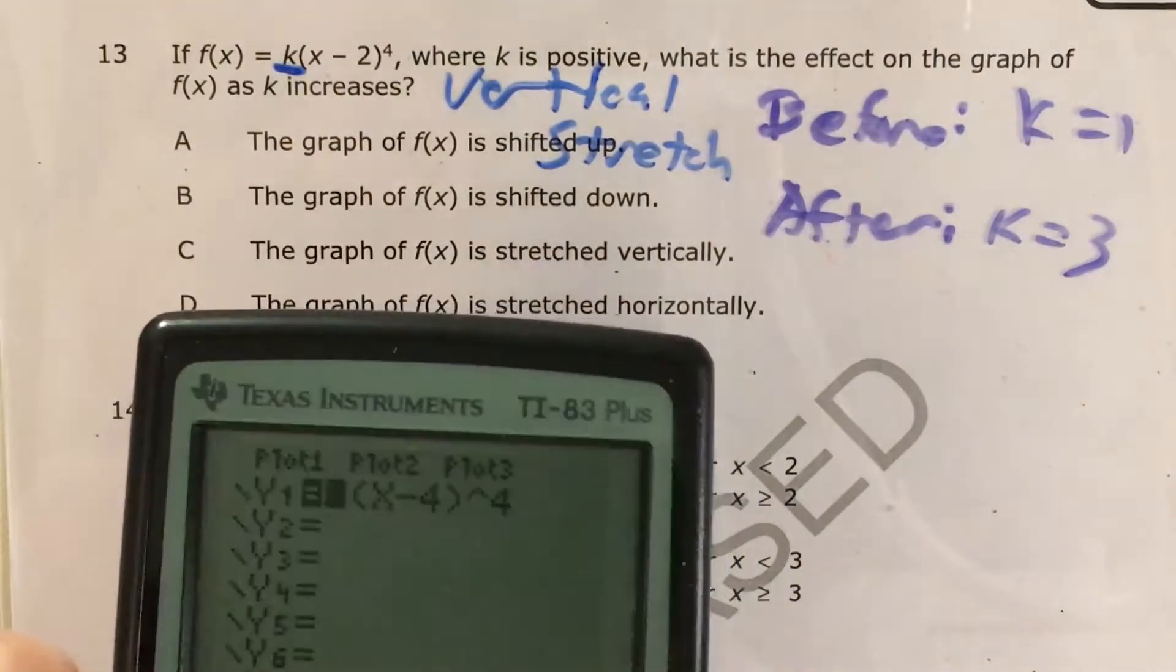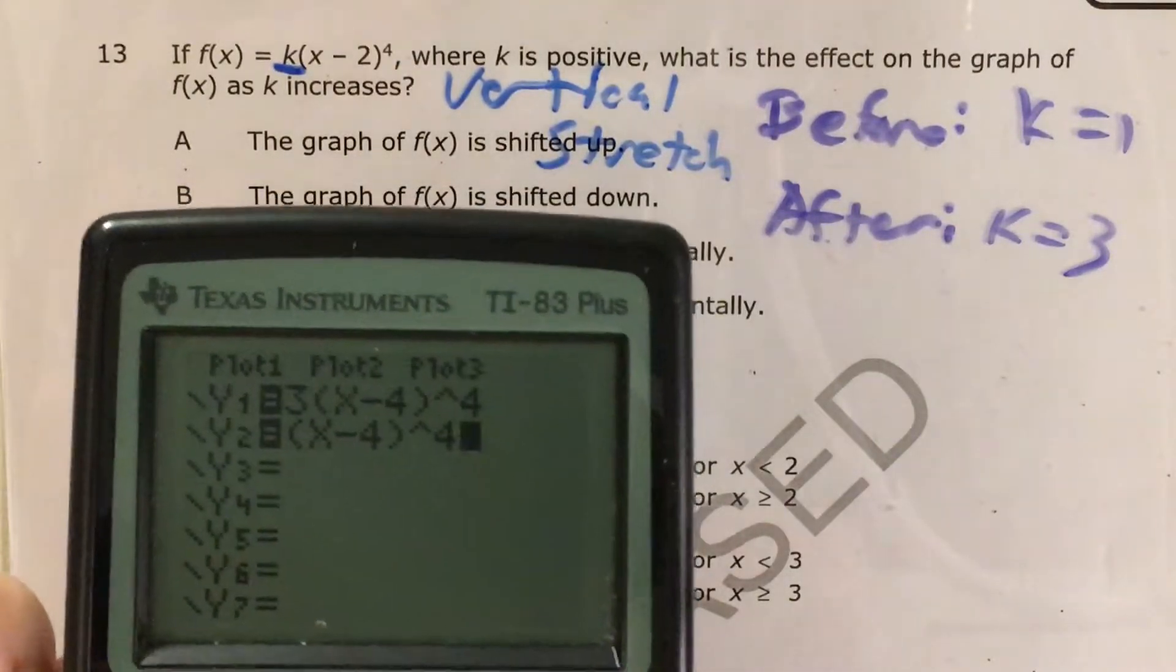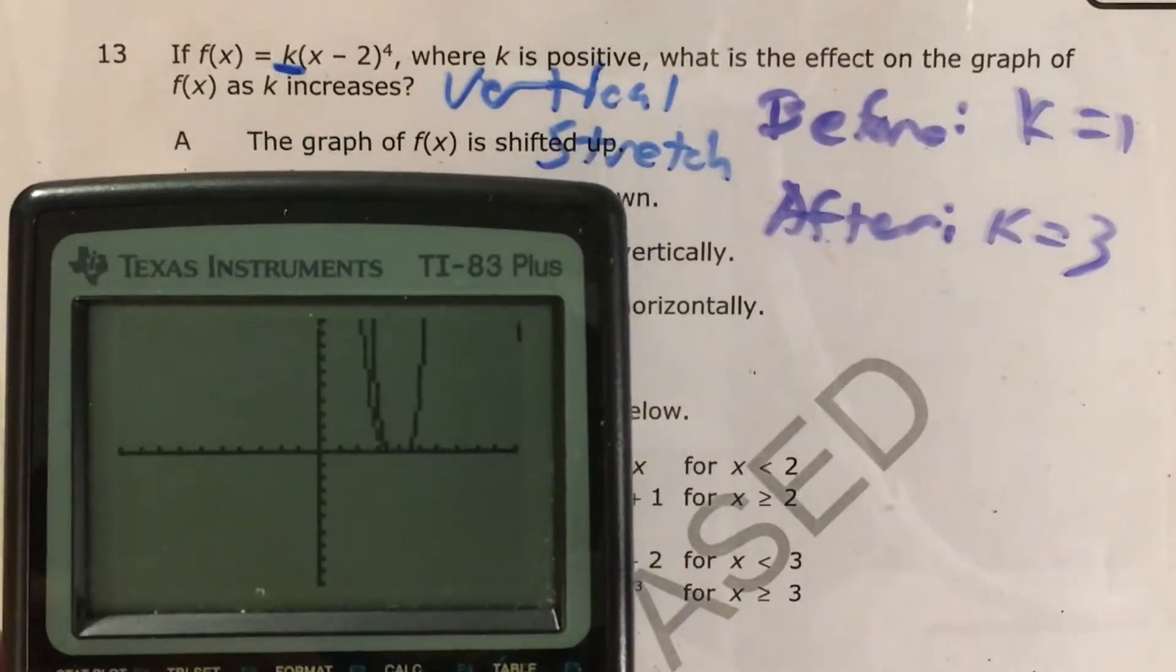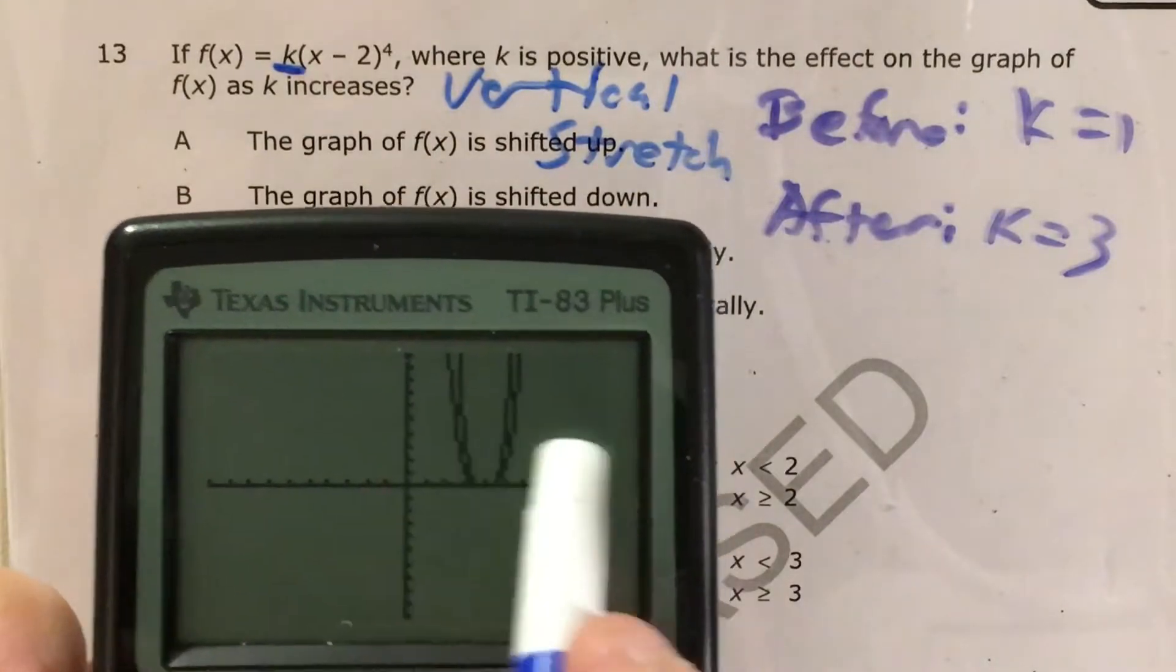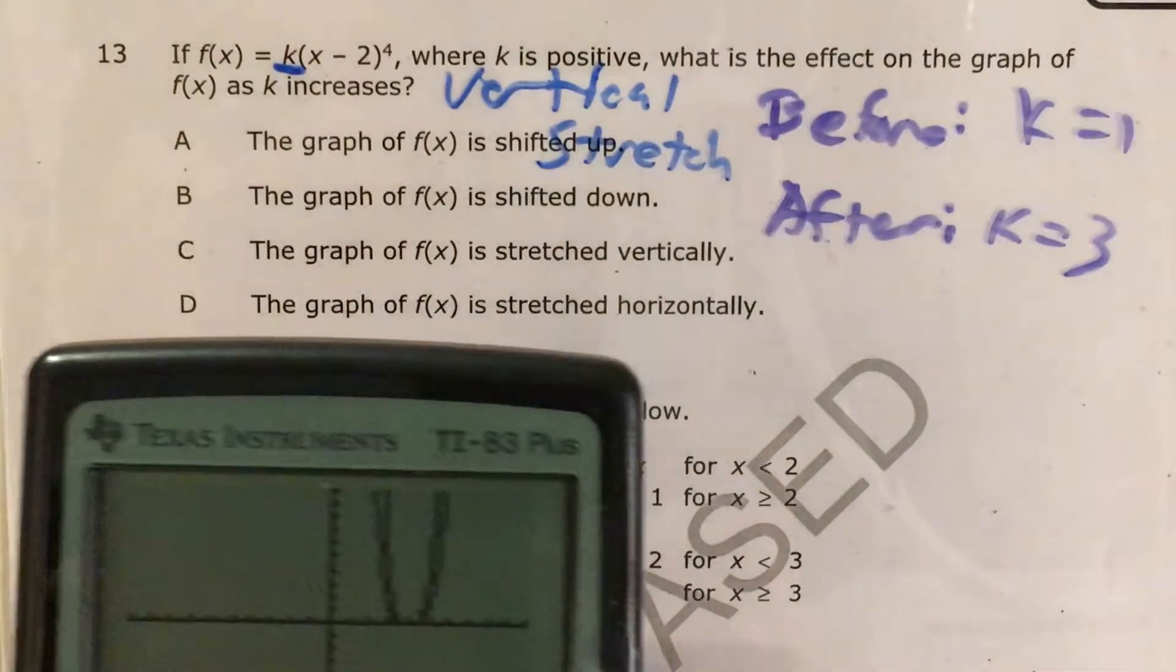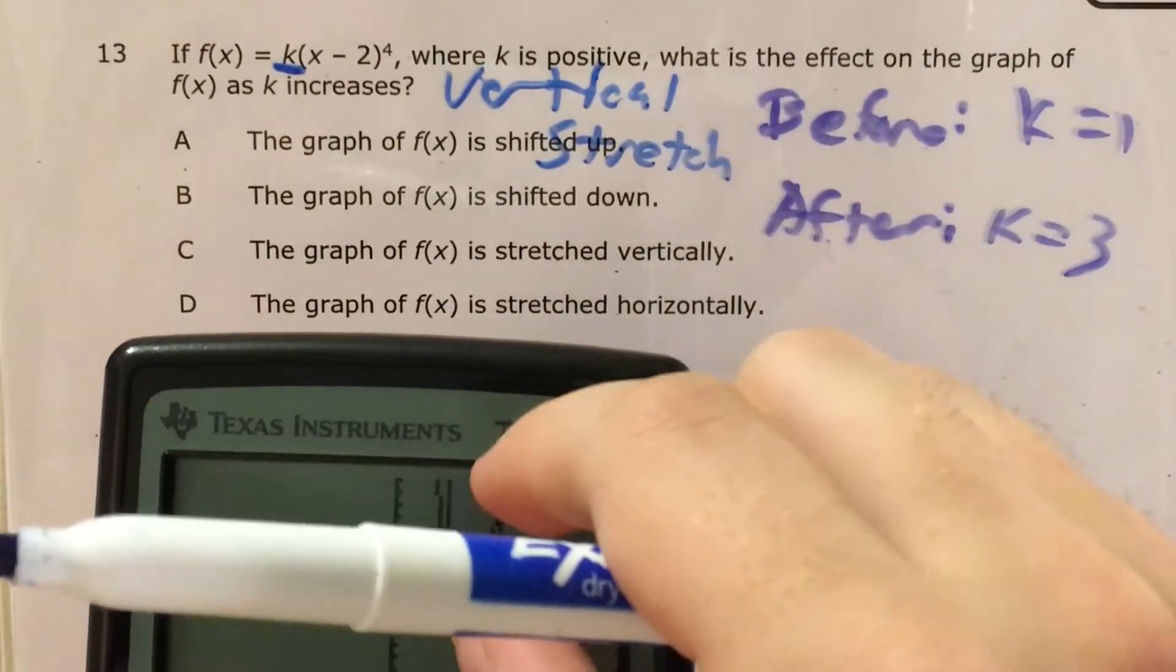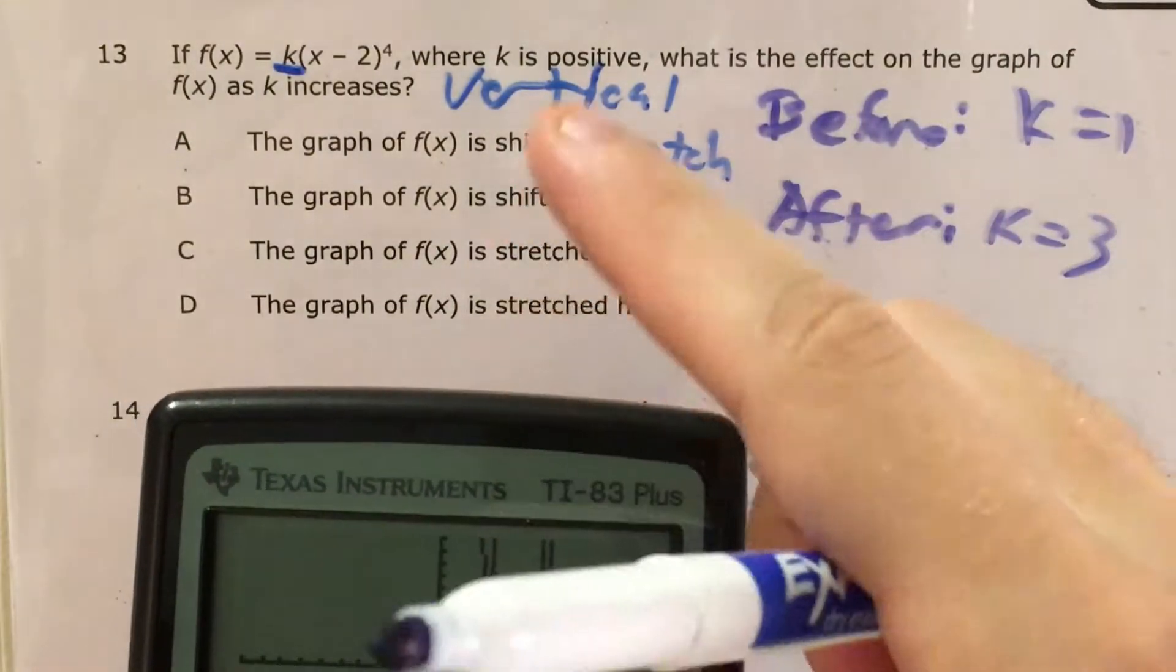And we can kind of see that that happened here, because if I actually go ahead and graph the original function, the wider one is the original, the narrower one is after we increased k. So we can kind of see how the narrower one could happen if we just stretched out the wider one vertically.